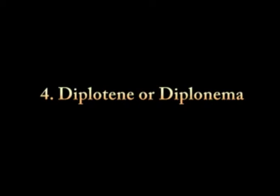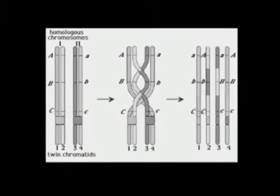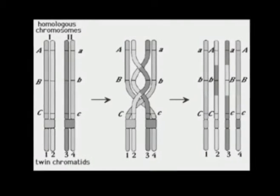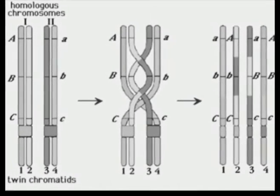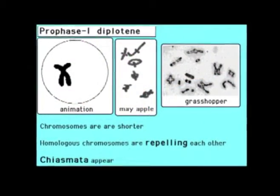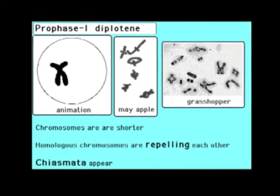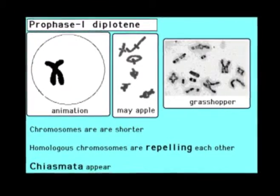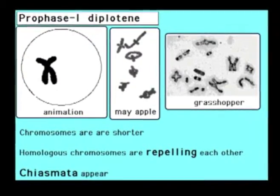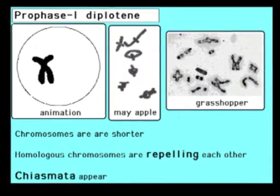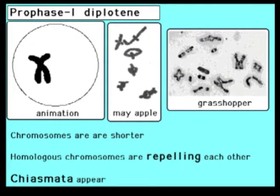Diplotene or Diplonema: In diplonema, unpairing or desynapsis of homologous chromosomes is started and chiasmata are first seen. The chromatids of each tetrad are usually clearly visible, but the synaptonemal complex appears to be dissolved, leaving participating chromatids of the homologous chromosomes physically joined at one or more discrete points called chiasmata. These points are where crossing over took place.